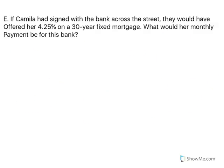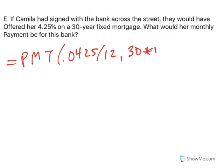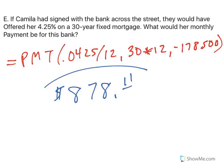Now, if Camilla had just walked across the street, there's a bank that would have offered her 4.25% on the 30-year mortgage. You might think 5.5% vs. 4.25% is only 1.25%, but it's for 30 years and she borrowed $178,500 — that's a lot. In Excel, we would type PMT(.0425/12, 30×12, 178500), and she would have paid $878.11 per month. That doesn't seem nearly so bad.